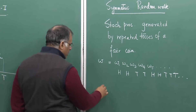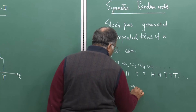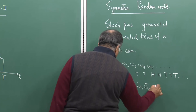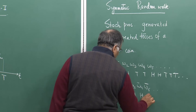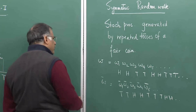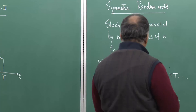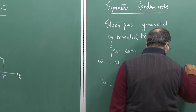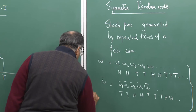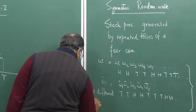You could have another scenario omega-bar, consisting of omega 1-bar, omega 2-bar, omega 3-bar, omega 4-bar, omega 5-bar, and it could be something like tail, tail, head, head, head, tail, tail, tail, head, head and so on. These two are different scenarios and each would generate two different sample paths. How do we generate this symmetric random walk? These are two different scenarios, two different scenarios.